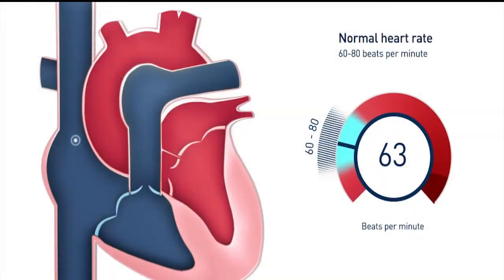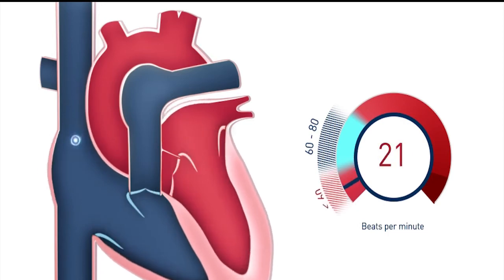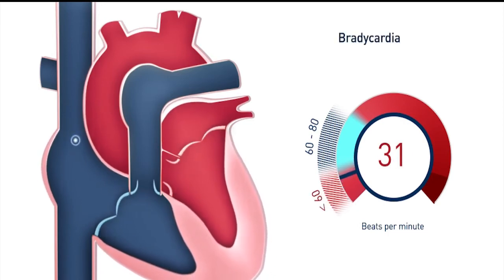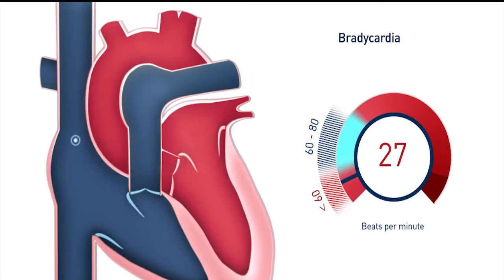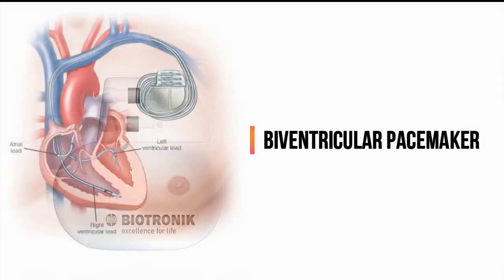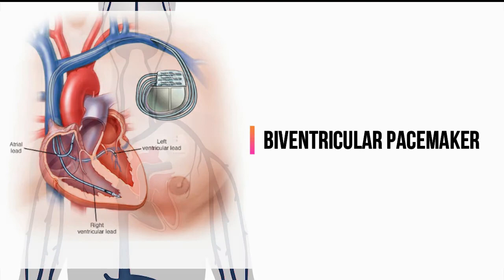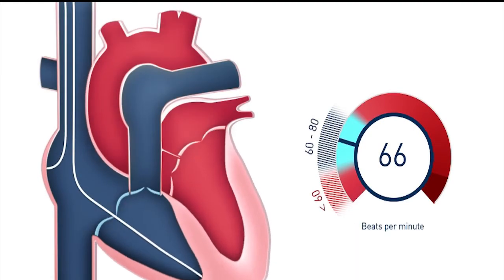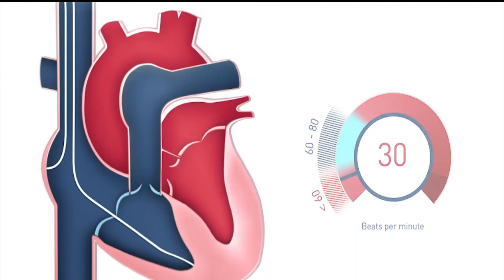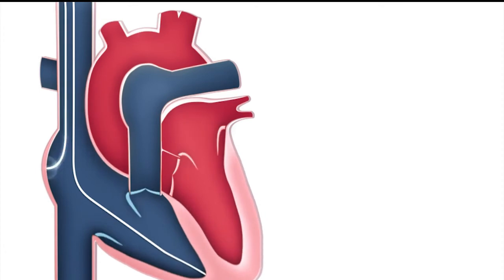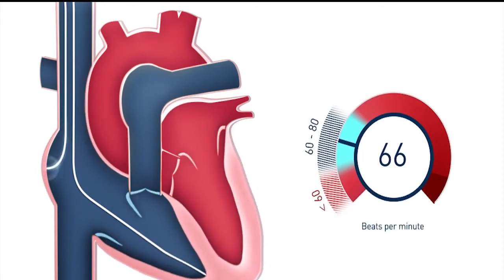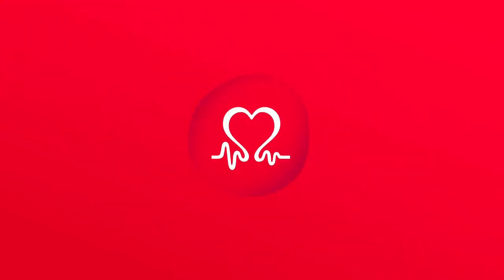A dual chamber pacemaker helps control the timing of contractions between the two chambers. Biventricular pacemaker: biventricular pacing, also called cardiac resynchronization therapy, is for people with heart failure with abnormal electrical systems. This type of pacemaker stimulates the lower chambers of the heart — the right and left ventricles — to make the heartbeat more efficiently.